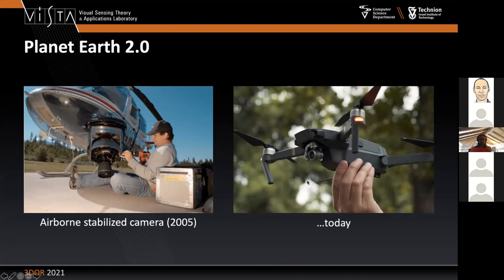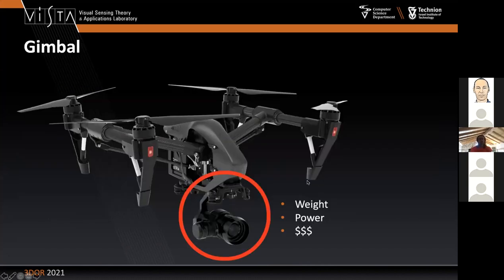But still, if you look at the imaging system — at the camera — the most expensive part, expensive not just in terms of bill of materials but also weight, cost, system cost, and power cost, is the gimbaled, mechanically stabilized camera.